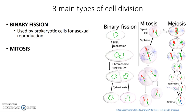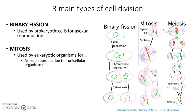The next one is mitosis, which is used by eukaryotic organisms for different things, depending on what kind of organisms they are. If it's a unicellular organism, they'll be using mitosis for asexual reproduction. If you're a unicellular organism such as an amoeba and you divide into two cells, well now you're two amoebas, and so you have effectively reproduced.